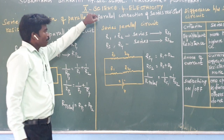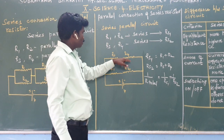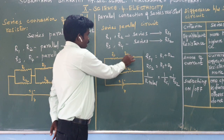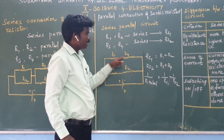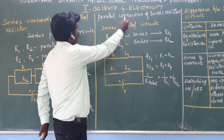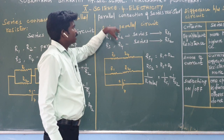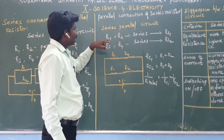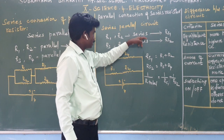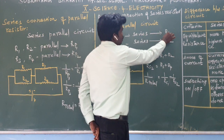Next is the parallel connection of series resistors. When resistors R1, R2, R3, R4 are connected in series, but the overall connection is parallel, we get a series-parallel circuit. First, consider R1 and R2 resistors connected in series — we get resistor series 1 (RS1). R1 and R2 are end-to-end connected, which makes it a series circuit.